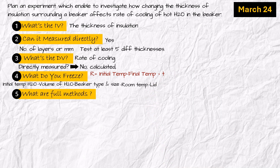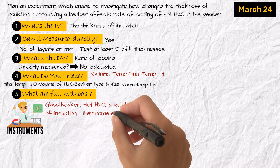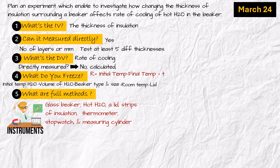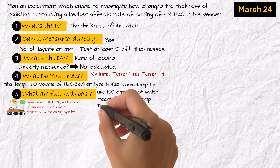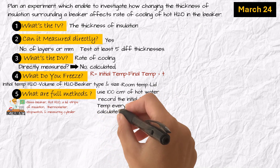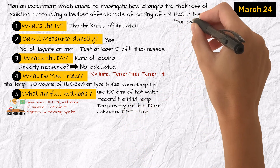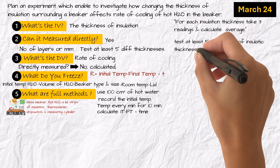Number five: what's the full method, including instruments? To carry out the experiment, I will use a glass beaker, a supply of hot water, a lid, strips of insulation, a thermometer, a stopwatch, and a measuring cylinder. For each insulation thickness, I will use 100 cm³ of hot water, record the initial temperature, and measure the temperature every minute for 10 minutes. I will calculate the rate of cooling using the formula: initial temperature minus final temperature, divided by time. For each insulation thickness, I will take three readings and calculate the average. I will test at least five different values of insulation thickness.